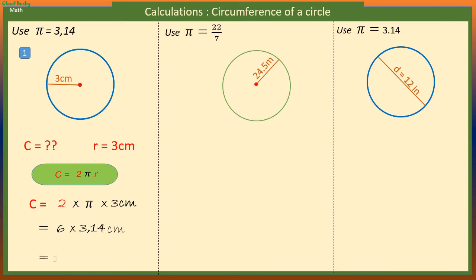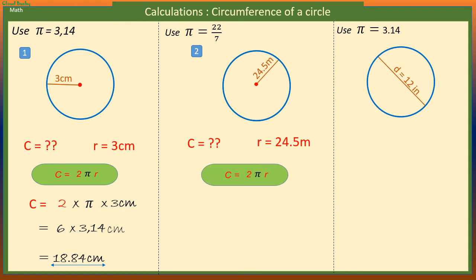To find the circumference for this circle with a radius of 24.5 meters, we use the formula C is equal to 2πr. That is 2 times π times radius. Let's take π to be 22 over 7. So we have 2 times 22 over 7 times 24.5 meters, which is from my calculator 154 meters.